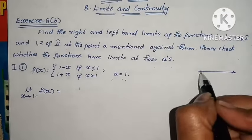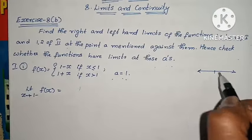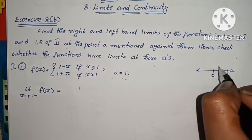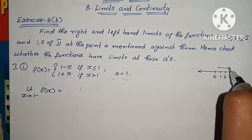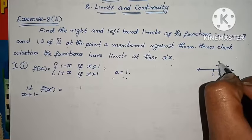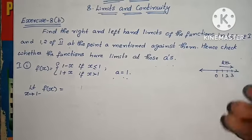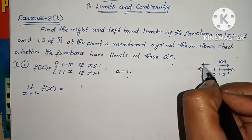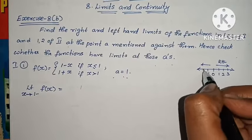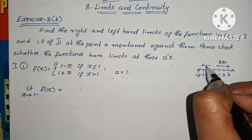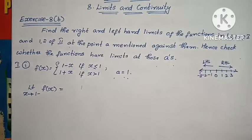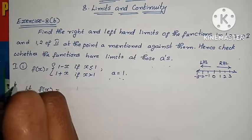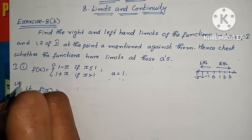Let's draw a number line. Here we have 0, 1, 2, 3. Going to the right, the numbers increase — that is the right-hand limit, going towards the right side. Going to the left, decreasing — minus 1, minus 2, minus 3 — that is the left-hand limit. So the minus sign indicates the left-hand limit.